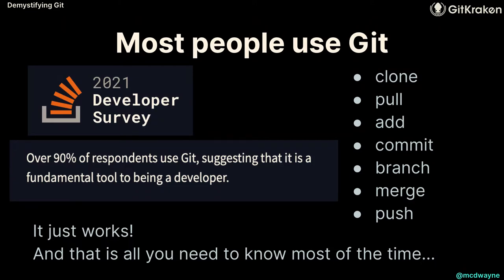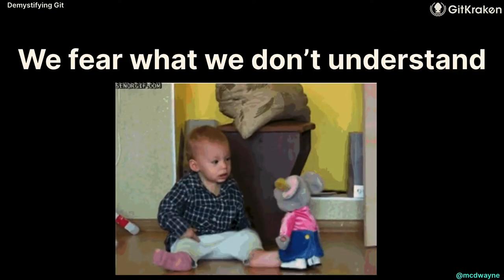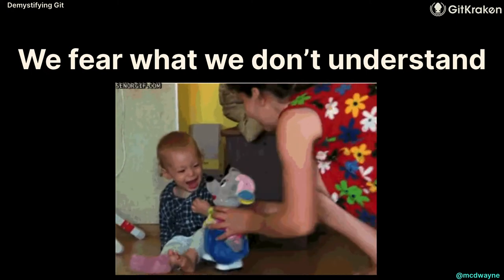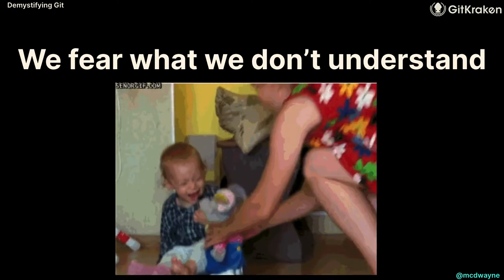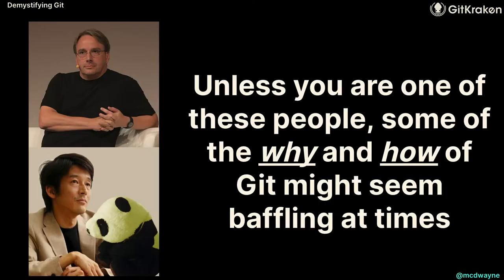Most people are comfortable with the basics — which is 90% of what you do in Git. But then we have to do these other things, and everybody gets really nervous. What the heck is a detached head state? We get scared of things we don't understand. Git is a dark art — it has terms like plumbing versus porcelain, trees and blobs. This description of rev-parse says 'pick out and massage parameters.' Feels like it was written by a Linux nerd, because it was.